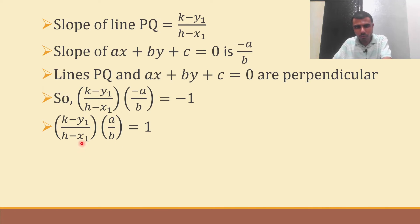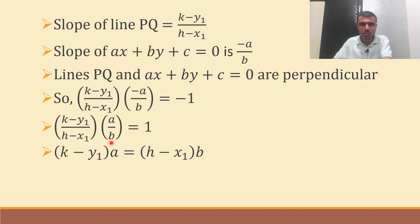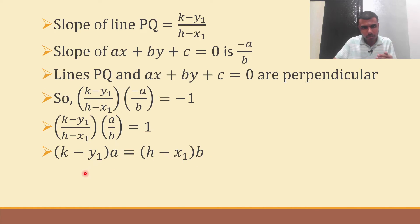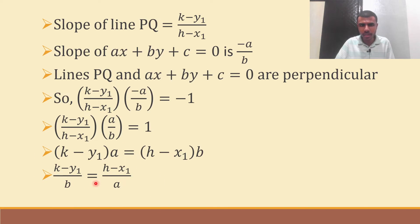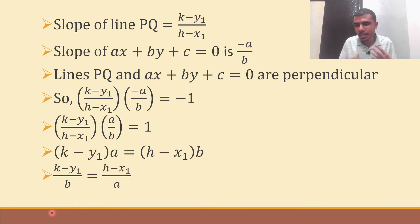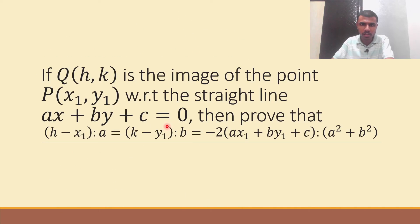So k minus y1 times a equals h minus x1 times b. Rearranging: k minus y1 by b equals h minus x1 by a. I got a ratio — h minus x1 by a and k minus y1 by b. I can see I am close to what I want.